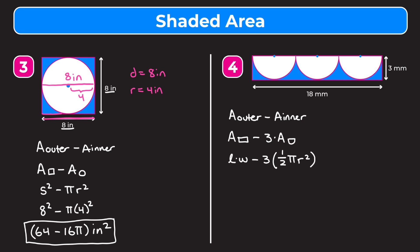The length of the rectangle is 18 millimeters and the width is 3 millimeters. To find the radius of the circles, notice that the radius of each circle equals the width of the rectangle, which is 3 millimeters. So we plug in: one half times pi times 3 squared.